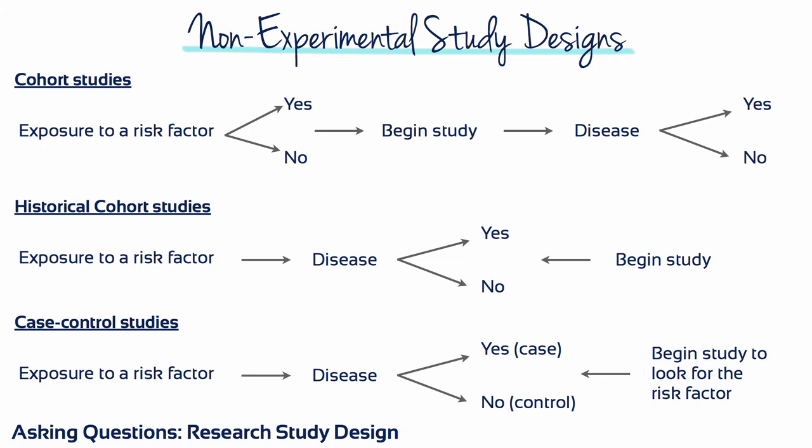In a historical study, both the exposure to the risk factor and the disease status are known, and the researcher uses historical data to define a risk group. One might ask what percentage of the people in the study who are known to have a disease had the risk, compared to the percentage of people who did not have the disease. This is a retrospective study.